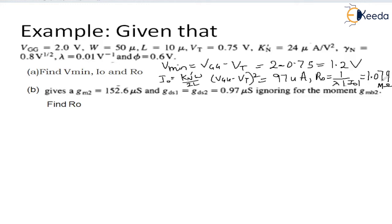Now, second point: it is given that GM2 is 152.6 microsiemens, and GDS1 equals GDS2, both equal as we are considering that the transistors used in negative feedback, both M1 and M2, are identical having GDS1 and GDS2 equal to 0.97 microsiemens. After applying this negative feedback loop, we need to find R0.